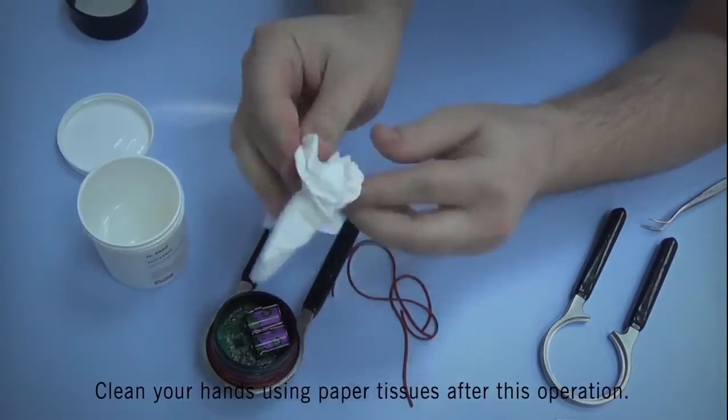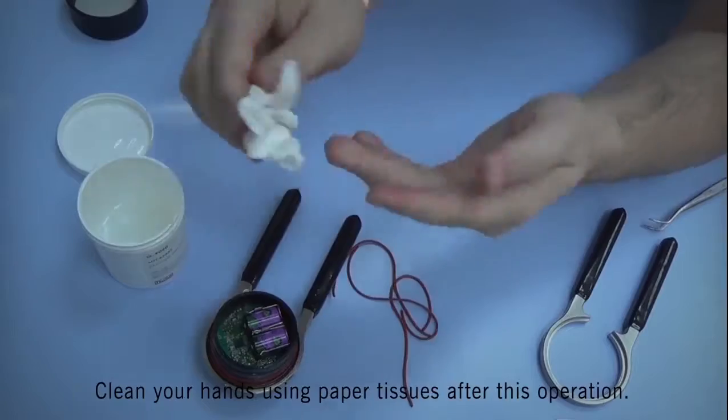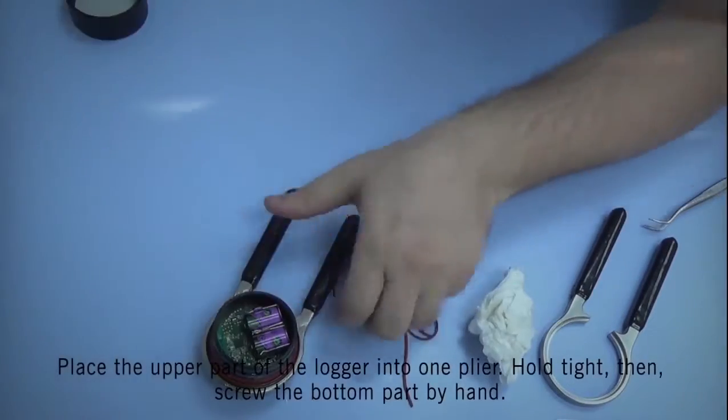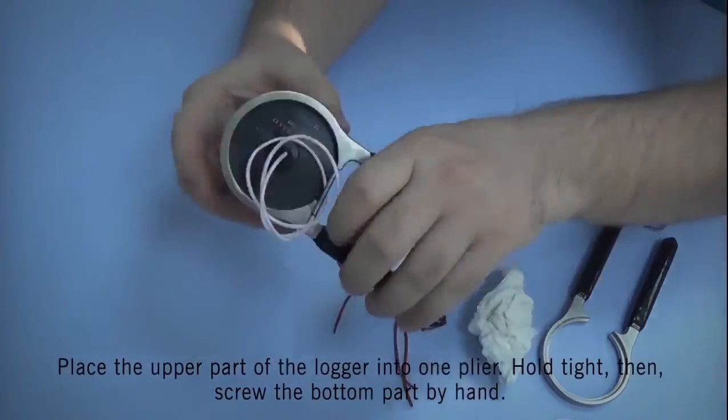You may clean your hands of grease at this point. Begin closing the logger by holding the upper part with the pliers and the bottom part with your hands and twist the logger shut.